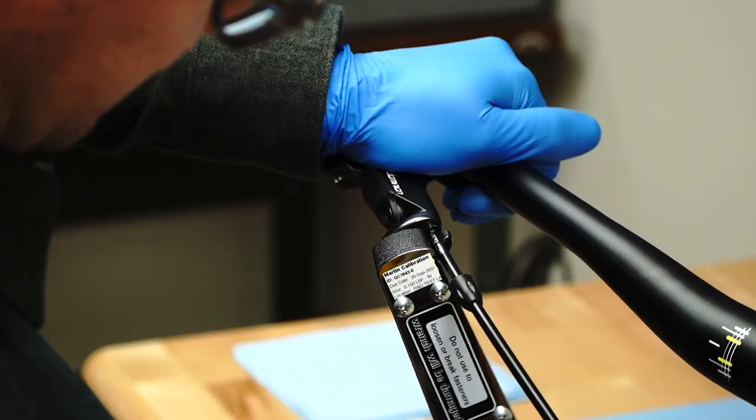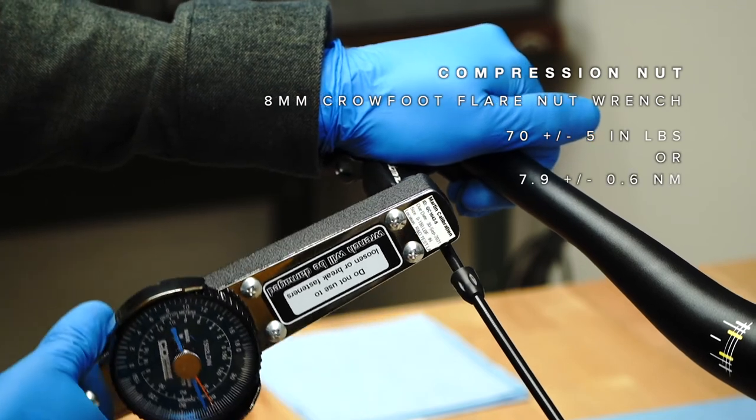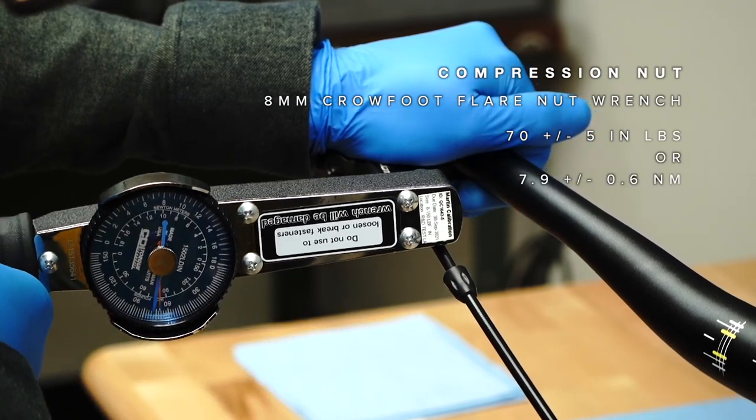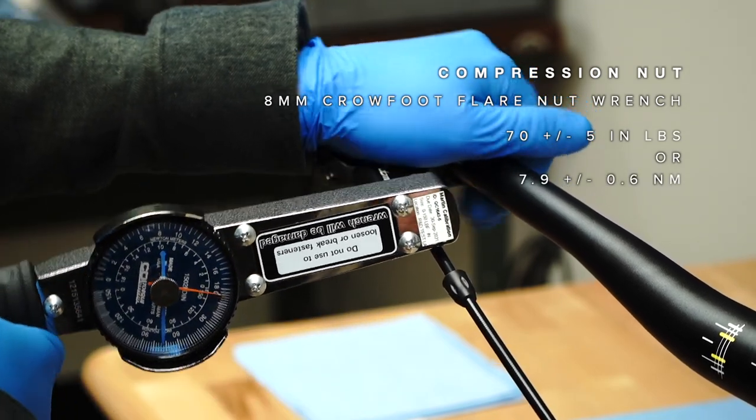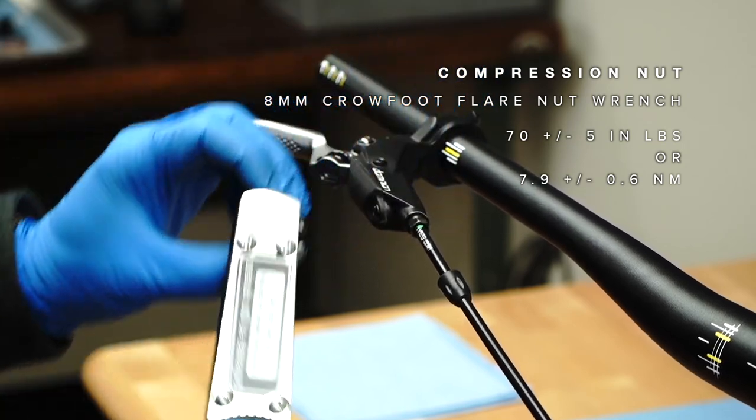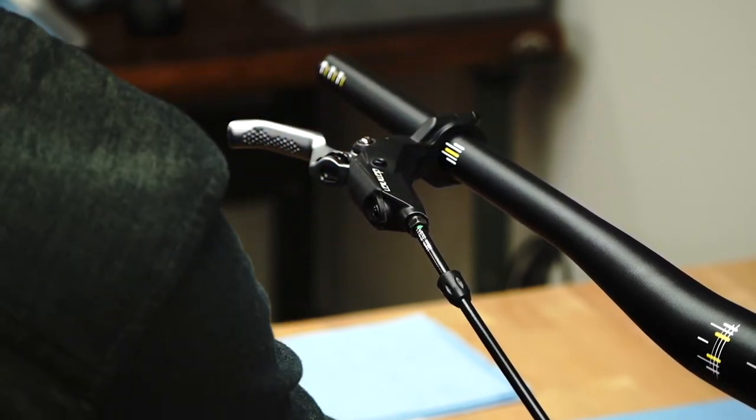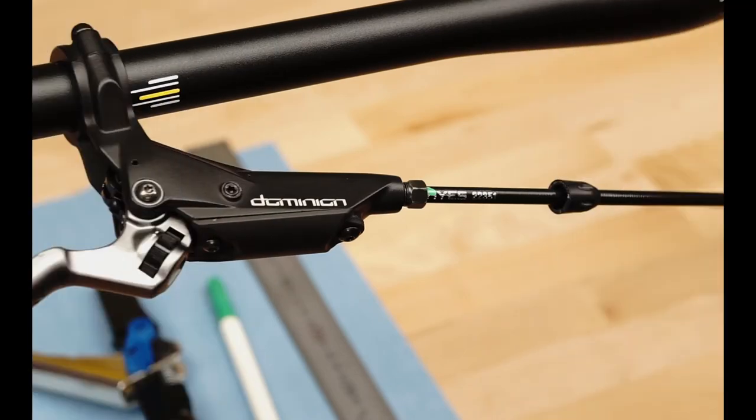Using an 8 millimeter crowfoot flare nut wrench, torque the compression nut to 70 inch pounds, plus or minus 5 inch pounds. As you torque the nut, the 18 millimeter line you drew will be exposed.